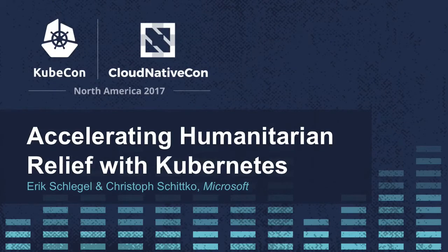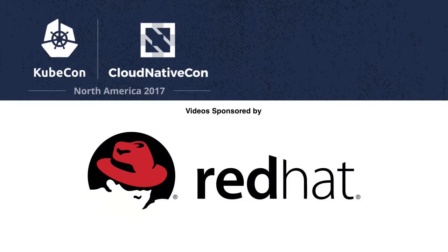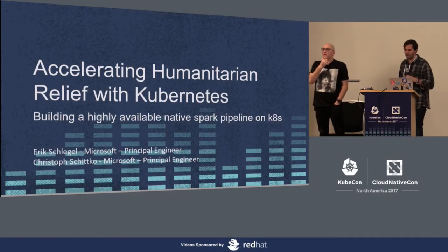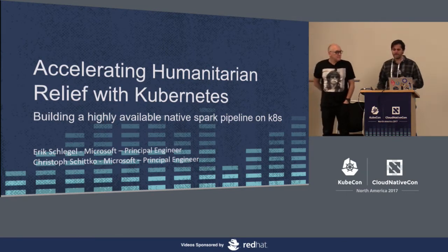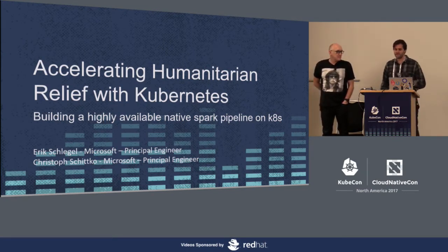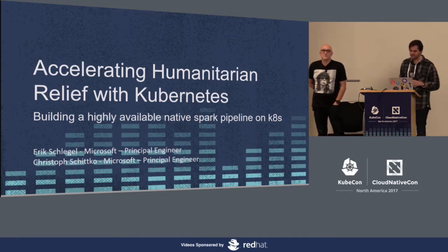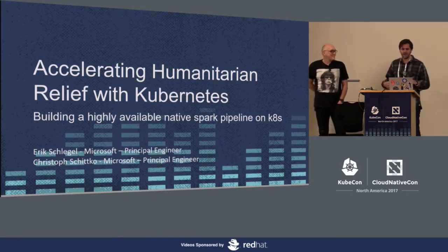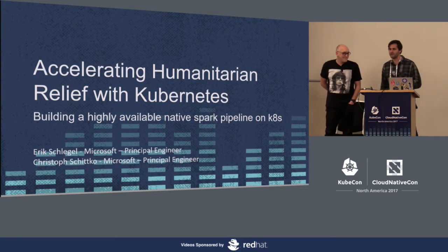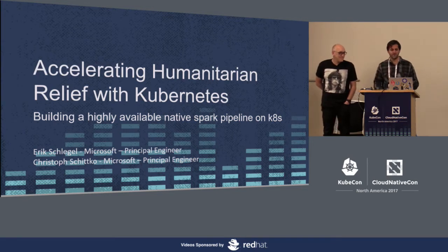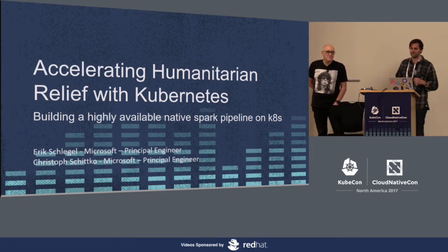User interaction and social data tell us a great deal about the real world. By understanding the time-dependent nature around the discussions in social media and the public web, we're able to identify and even sometimes predict important real-world trends. Today, Christoph and I, Eric, are here to talk about Project Fortis, which is spirited towards accelerating humanitarian relief, all powered by Kubernetes.